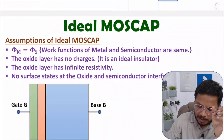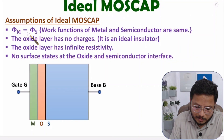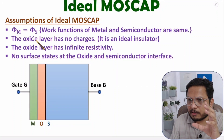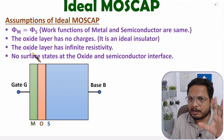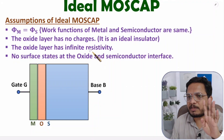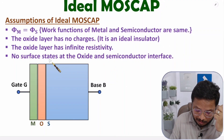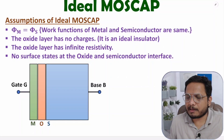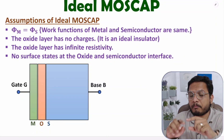To summarize the four assumptions: First, metal and semiconductor have equal work function. Second, there are no charges in the oxide layer. Third, the oxide layer has infinite resistivity. Fourth, the oxide and semiconductor junction has no surface states. Based on these assumptions, let us now look at the energy band diagram.